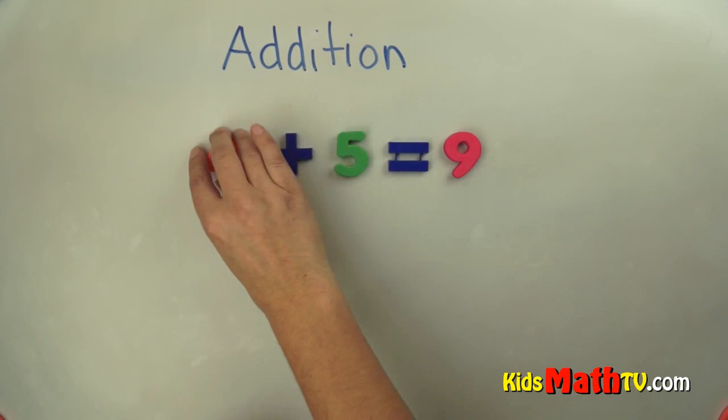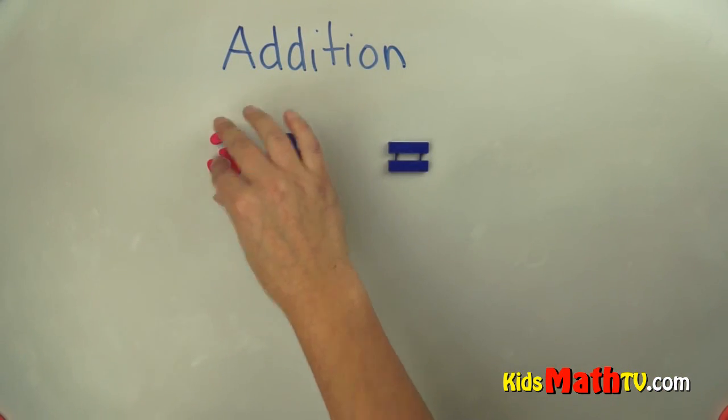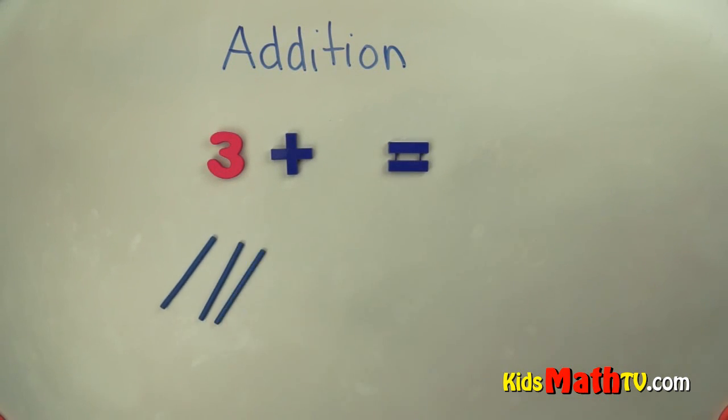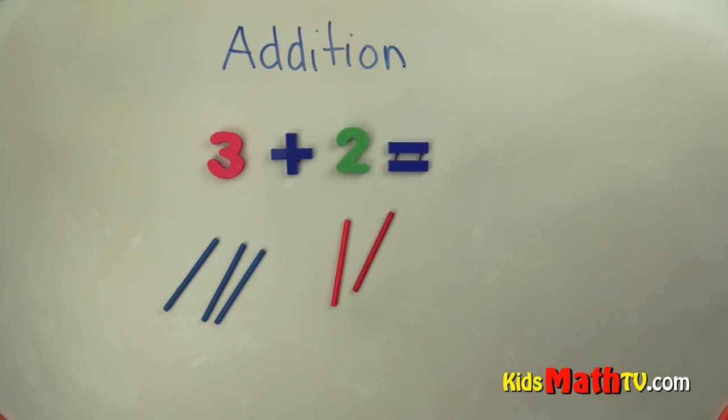Let's try another one. Take those off. We have three. Well, I'll start with three blue sticks this time. There's three blue sticks. And let's add it to two of the red sticks.